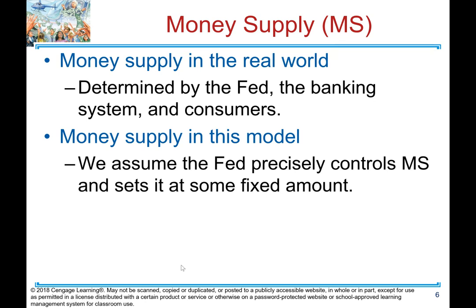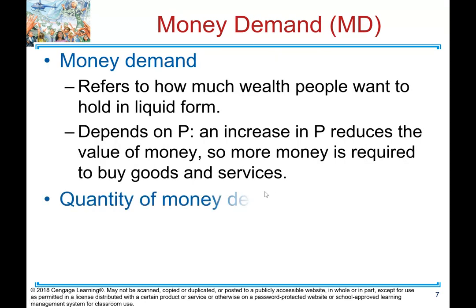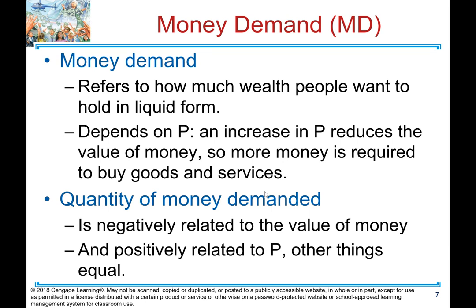Money supply in the real world is determined by the Federal Reserve, the banking system, and consumers. For our purposes in this model, we assume the Fed precisely controls money supply and sets it at some fixed amount. Money demand refers to how much wealth people want to hold in liquid form. It depends on price — an increase in price reduces the value of money, so more money is required to buy goods and services. The quantity of money demanded is negatively related to the value of money and positively related to price.